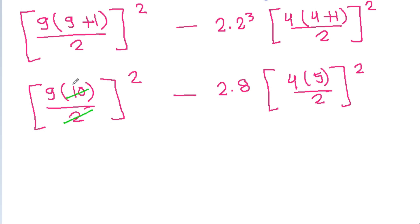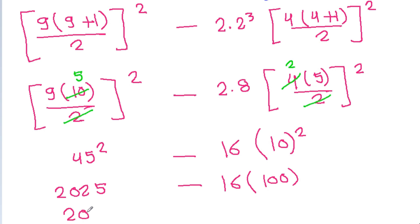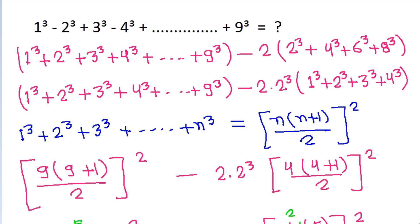2 times 5 is 10 and 2 times 2 is 4. So we get 45 squared minus 16 times 10 squared. 45 squared is 2025, minus 16 times 100 is 1600. It is 2025 minus 1600, which equals 425. So this is equal to 425.